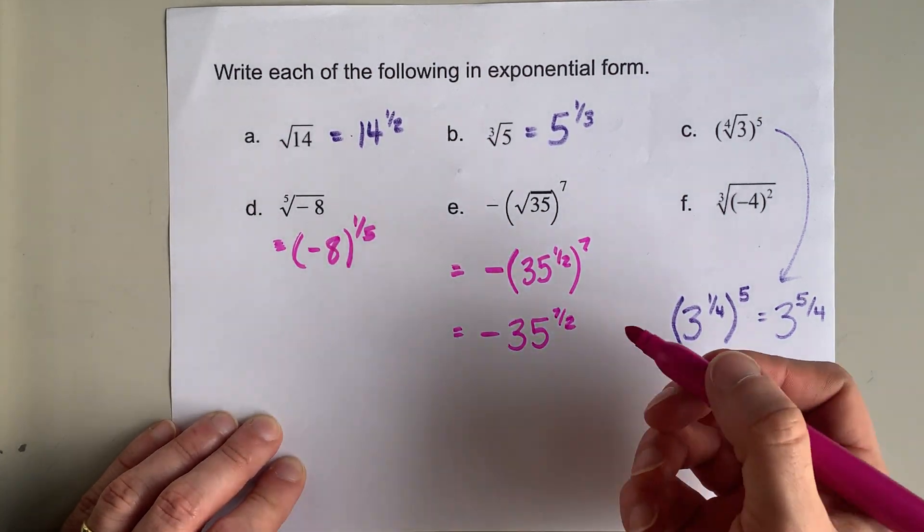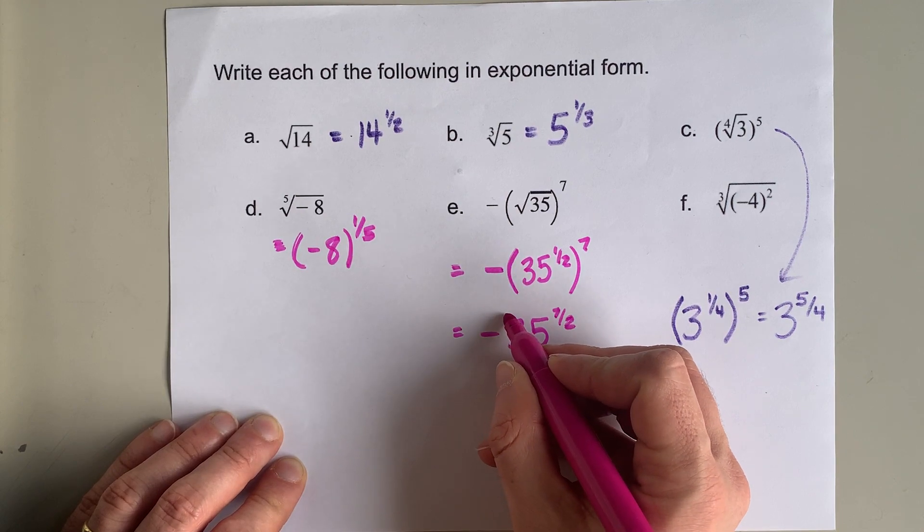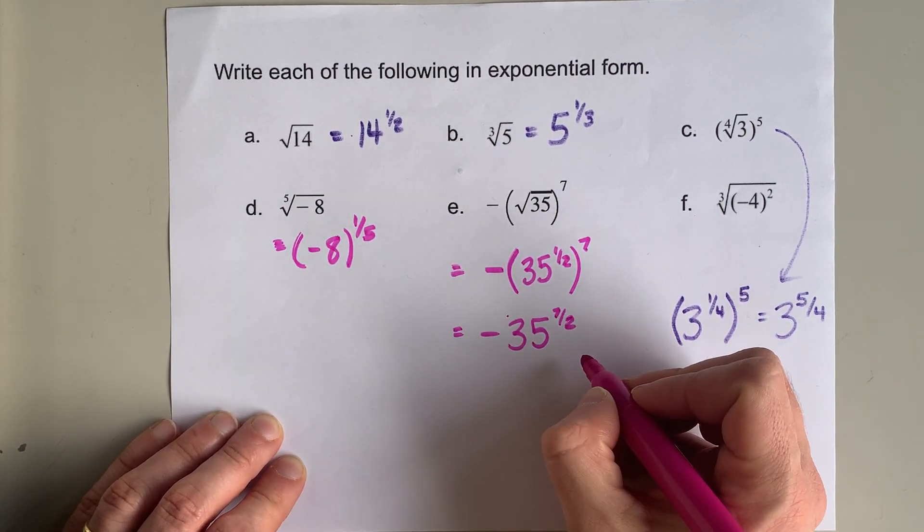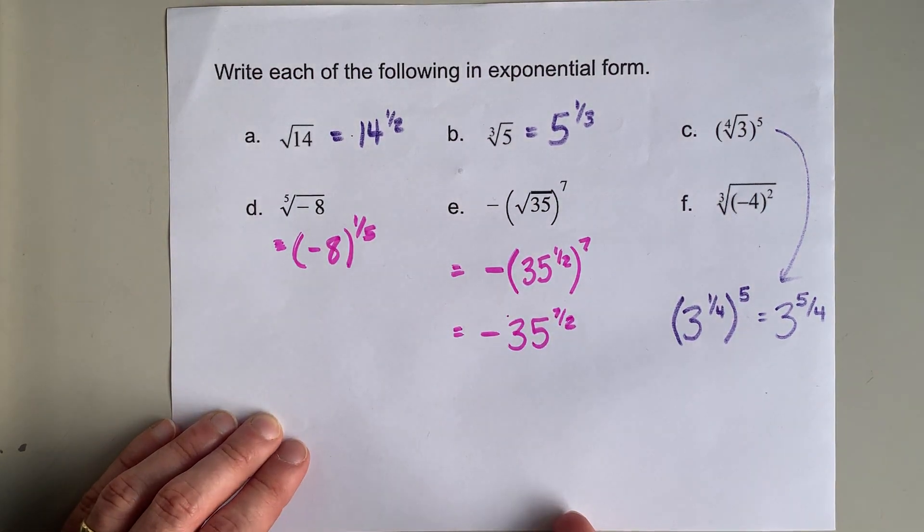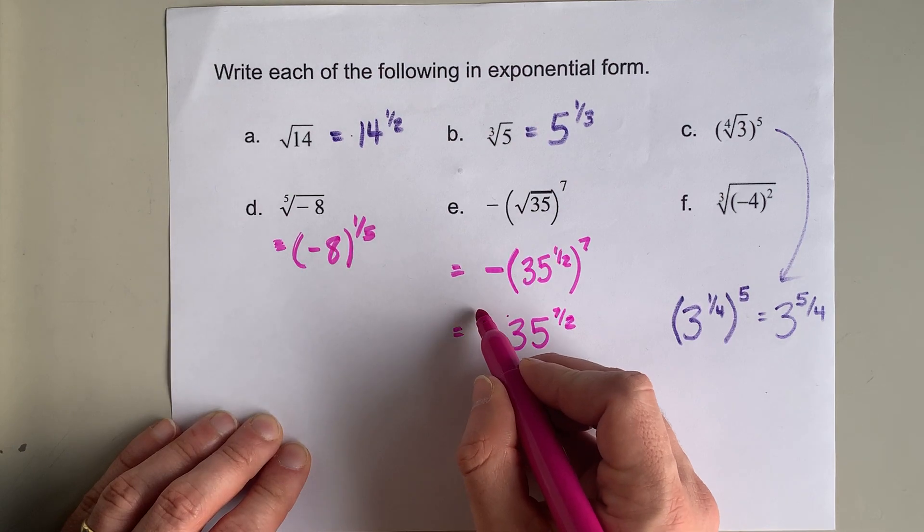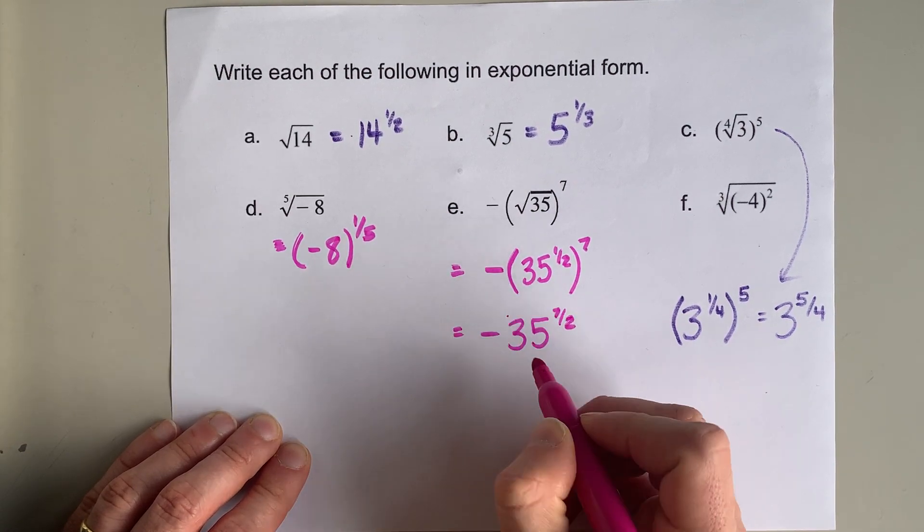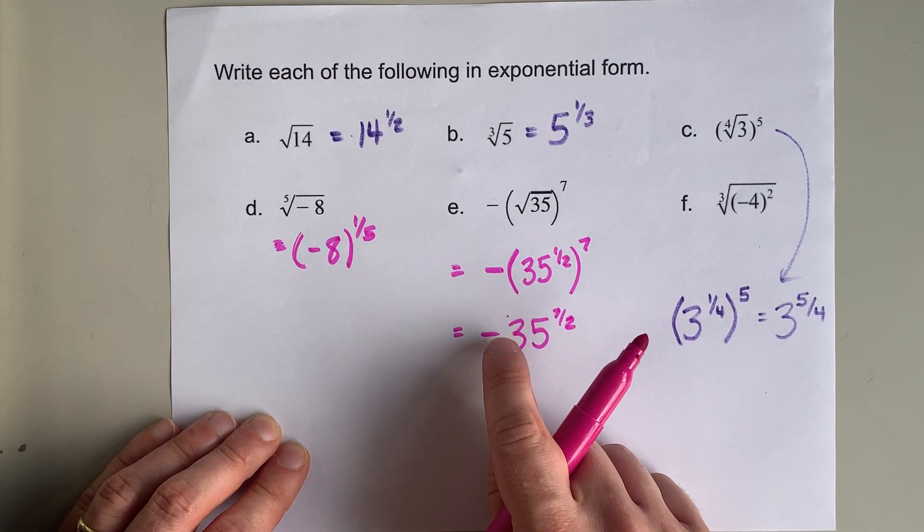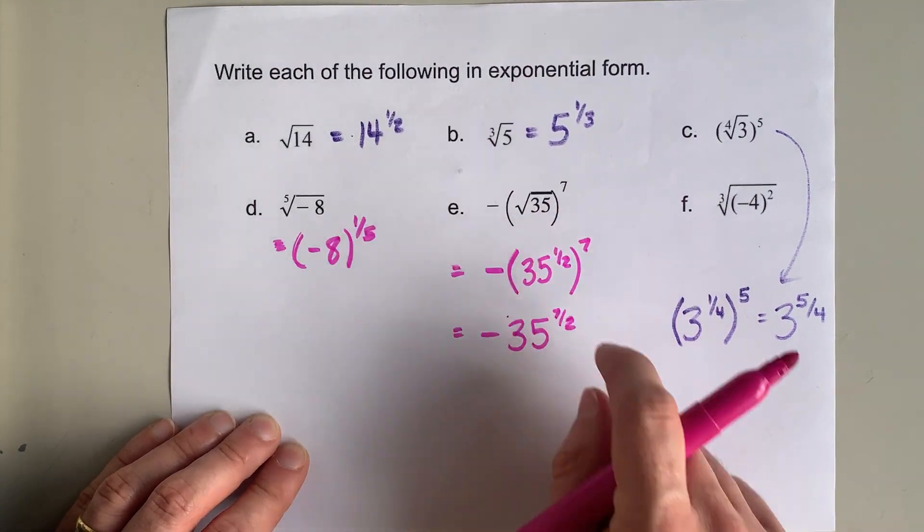If you really want to, you can put brackets around the 35 or even put them around 35 and the power. Those are all equivalent answers. The only places you're not allowed to put brackets here are collecting this negative and the 35 together, because then you're trying to apply that exponent to the negative, and that is not what the original question said.